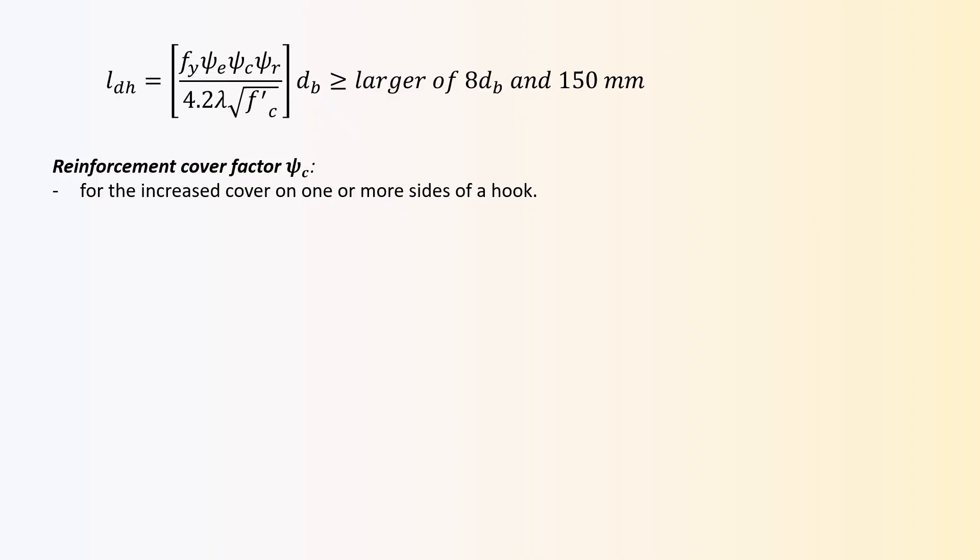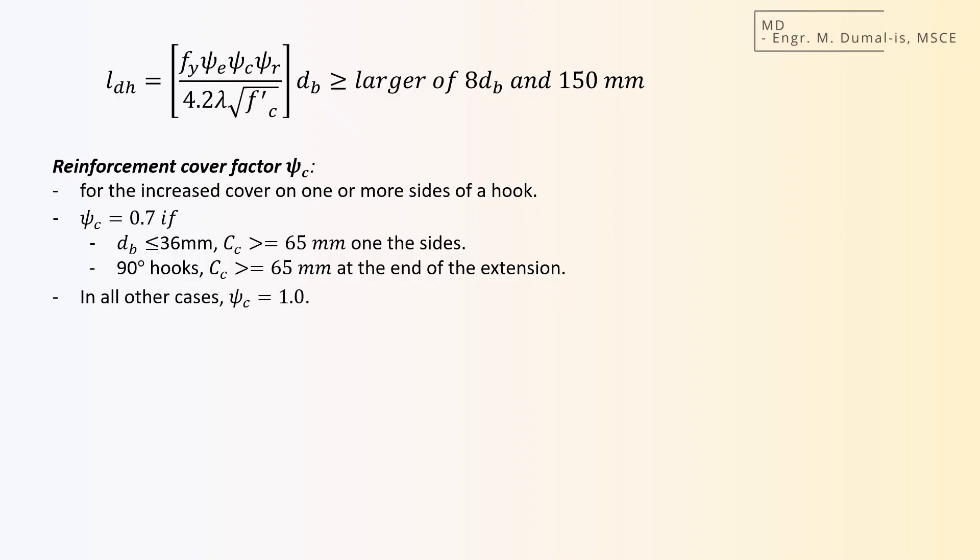The reinforcement cover factor, ψc, accounts for the amount of increased cover on one or more sides of a hook. The factor may be taken as 0.7 when one or both of the following conditions are applicable. Number 1, for 36 mm bar and smaller hooks, where the side cover normal to the plane of the hook is 65 mm or greater. And number 2, 90 degree hooks, where the cover on the bar extension beyond the hook is 50 mm or greater. In all other cases, the factor is 1.